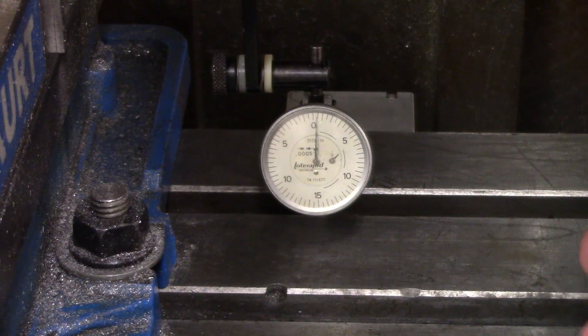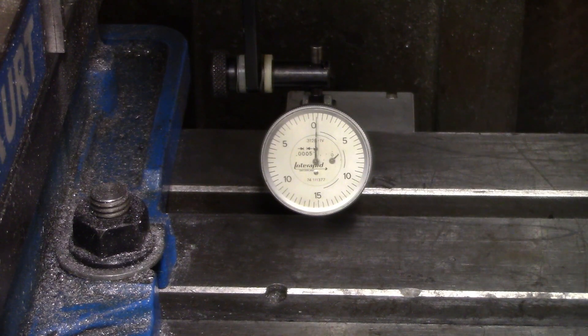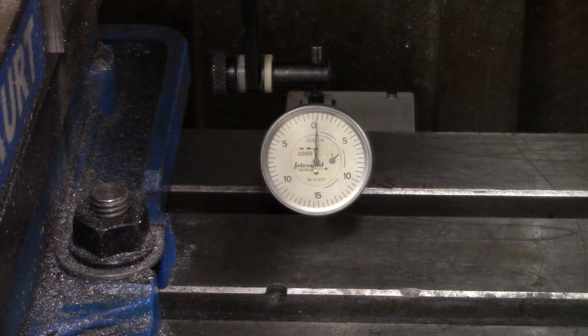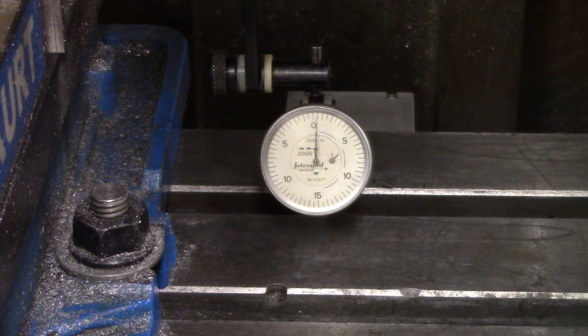It never really varied by more than a thousandth of an inch either way, which is pretty decent. I think that's good enough. Like I said, this is an old machine. This was built in 1963. Considering that stayed relatively steady over about half the table travel, I'm pretty satisfied with that.